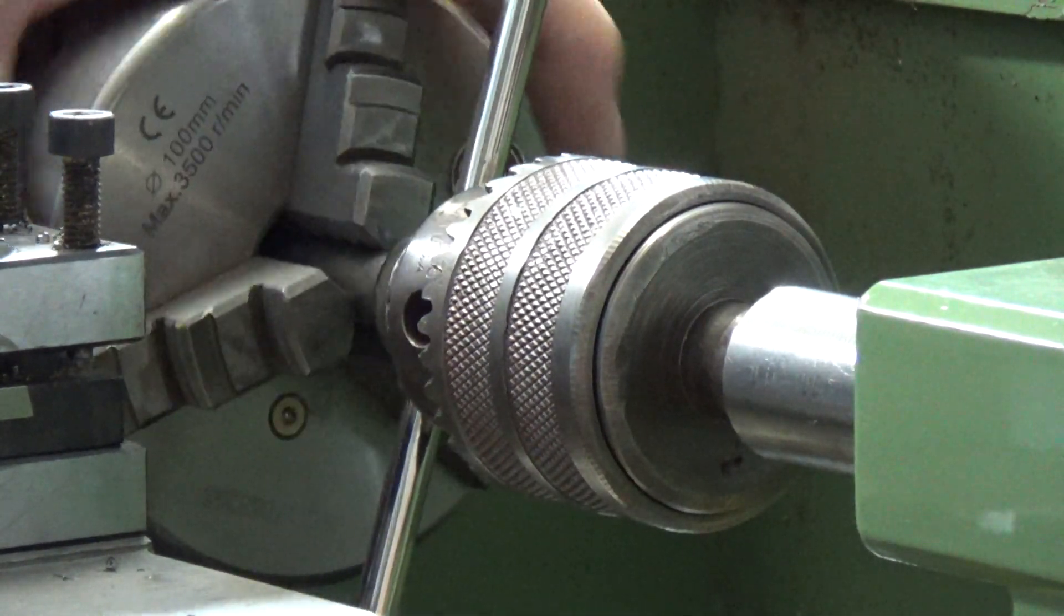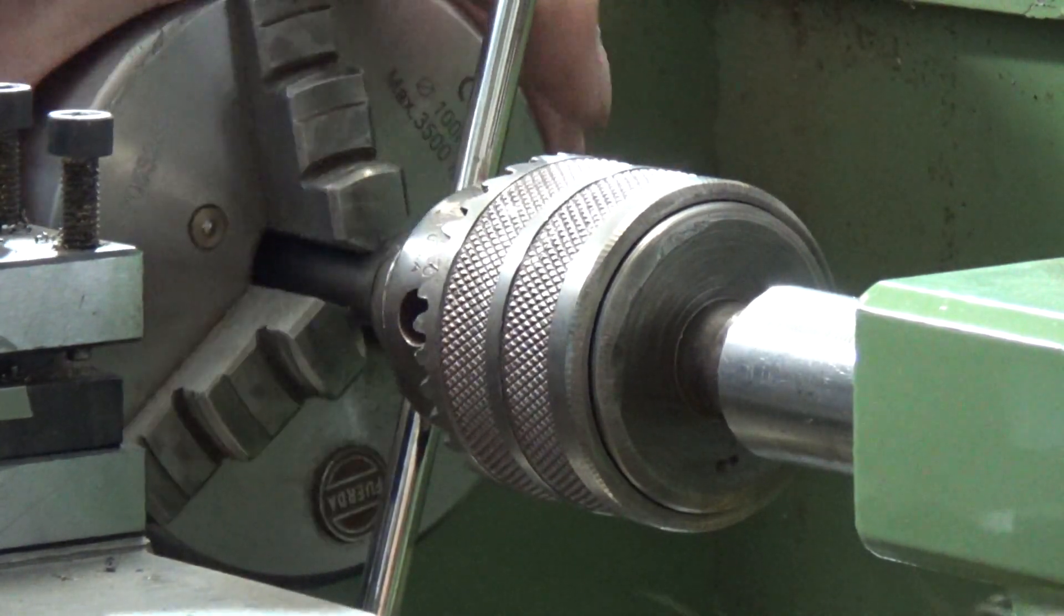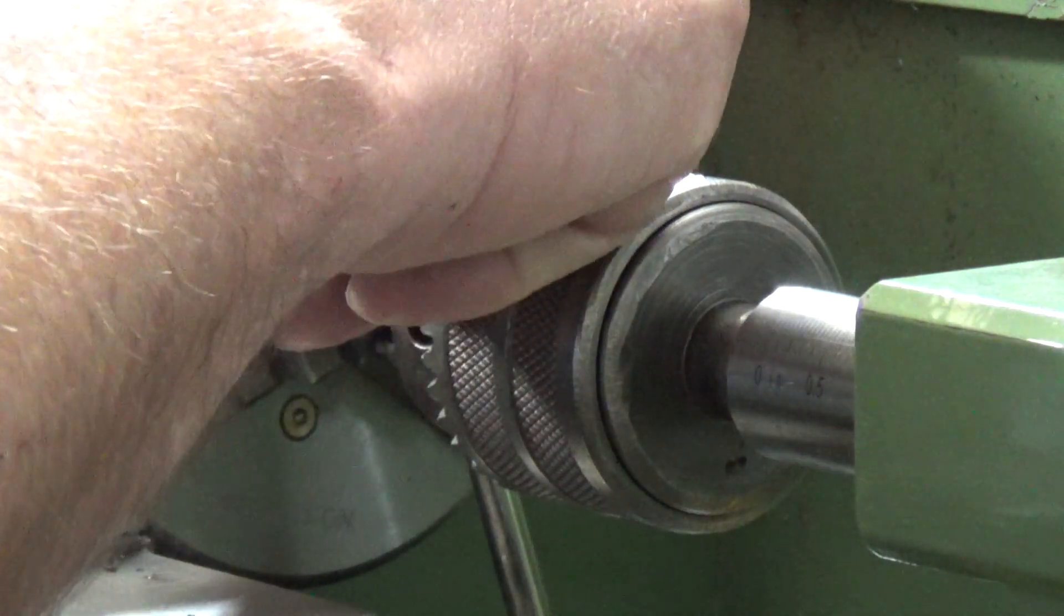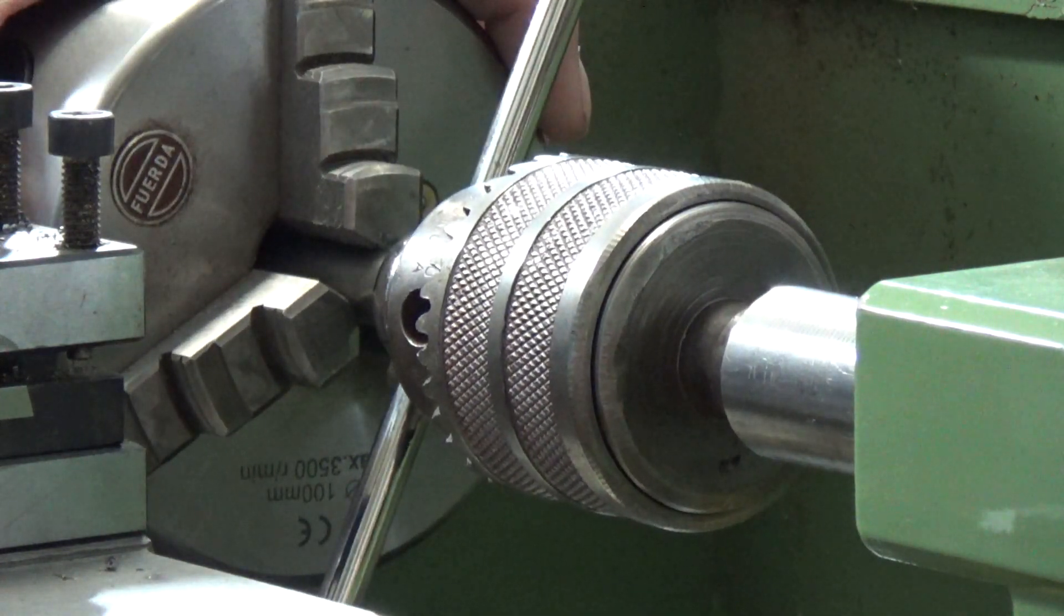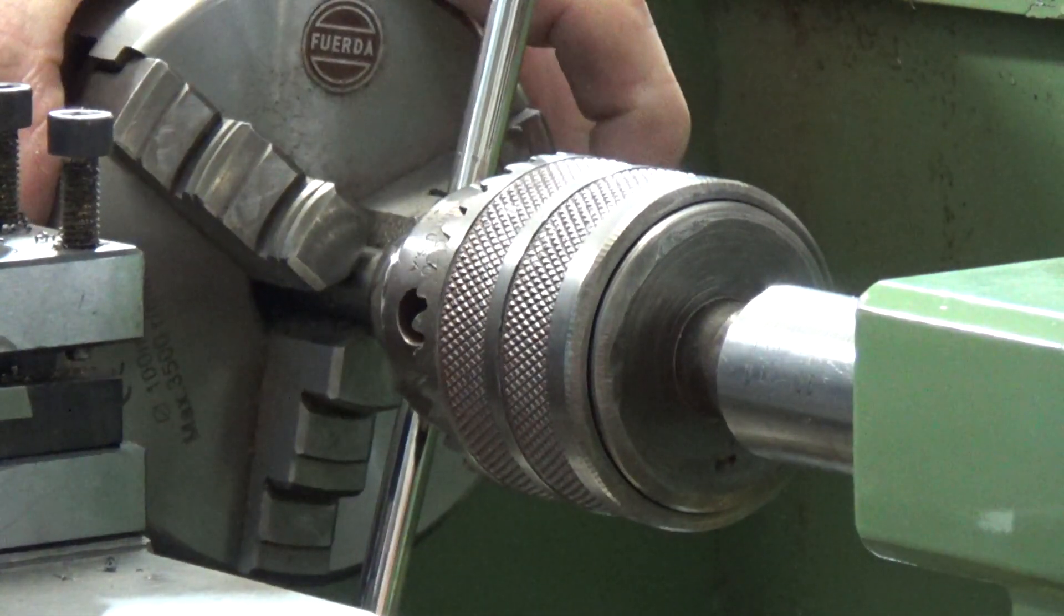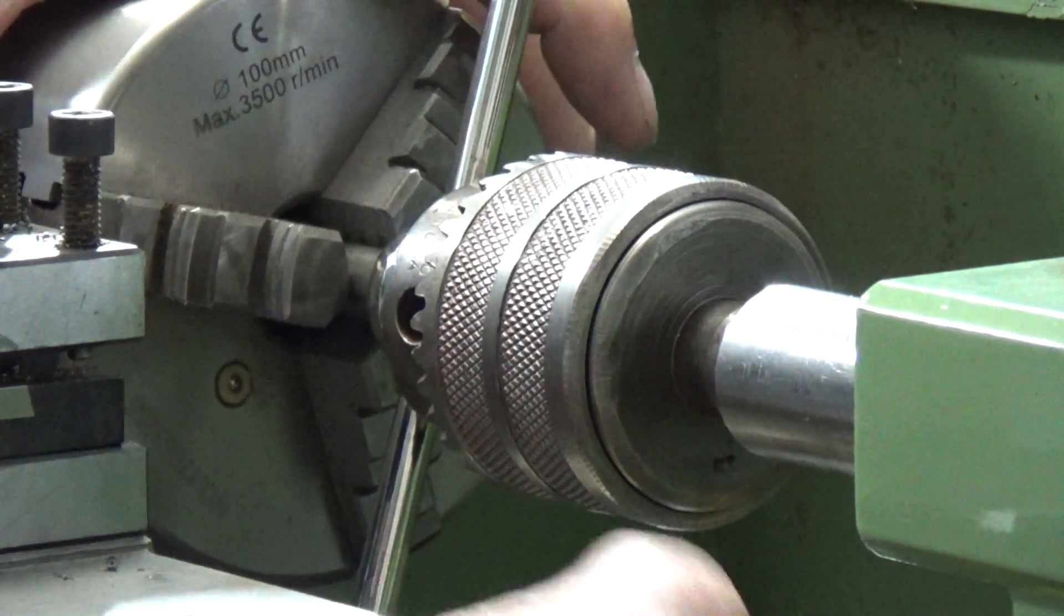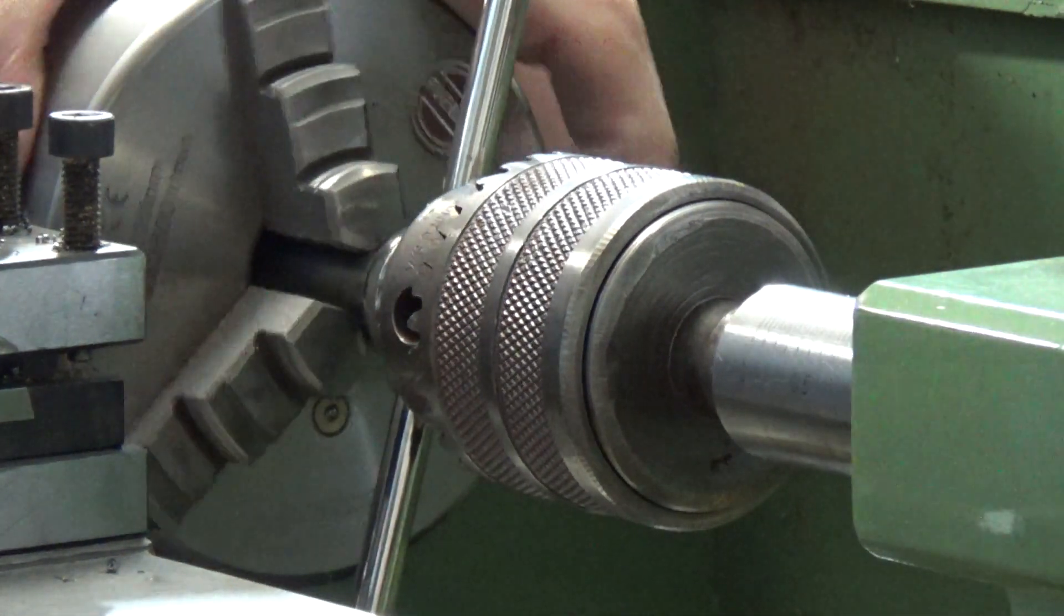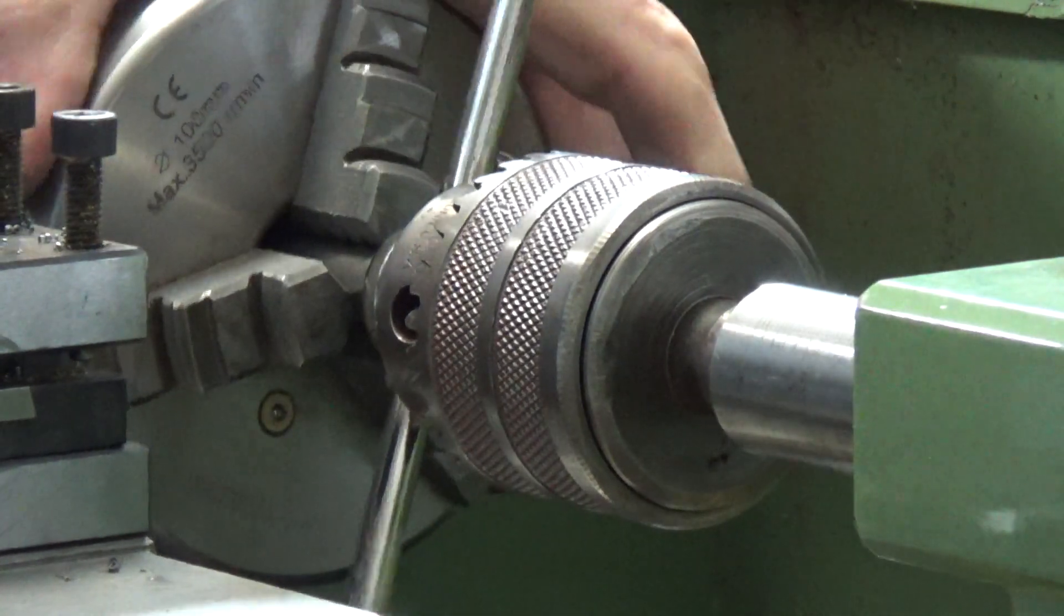You'll feel it cutting. Once you've got it started then it's always a good idea to reverse the process and that will break off any chips that the die has created whilst it's started its thread. Wind that back up again, keep it square. And away you go. And we just keep going.